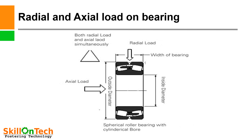Representation of radial and axial load on bearings. In this slide you can see a bearing with a radial load — the load acting perpendicular to the shaft — and an axial load, which is in the direction of the axis of the shaft. These radial loads and axial loads are subjected on the bearing, and bearings must withstand both loads to ensure smooth operation of the pump.